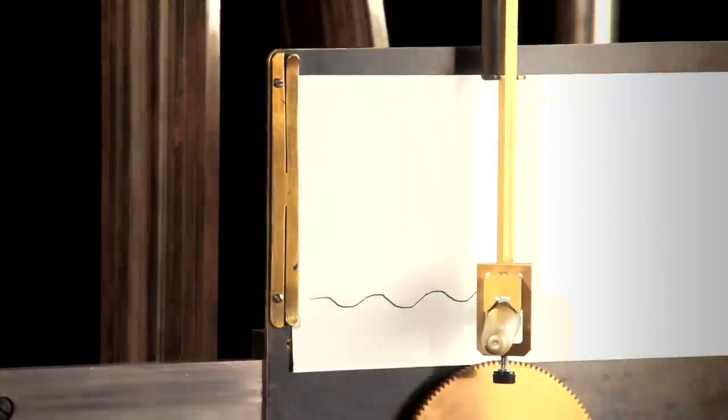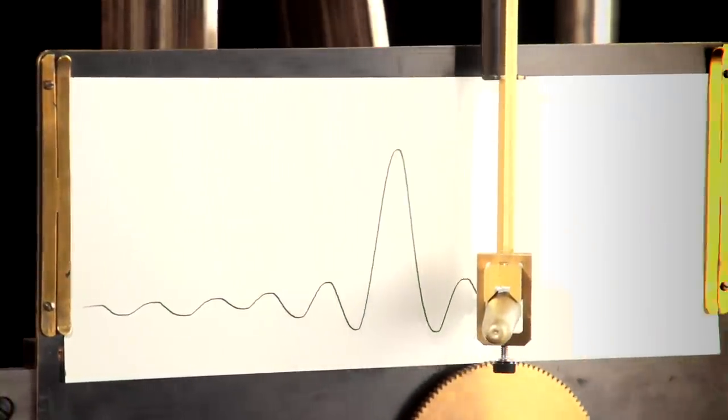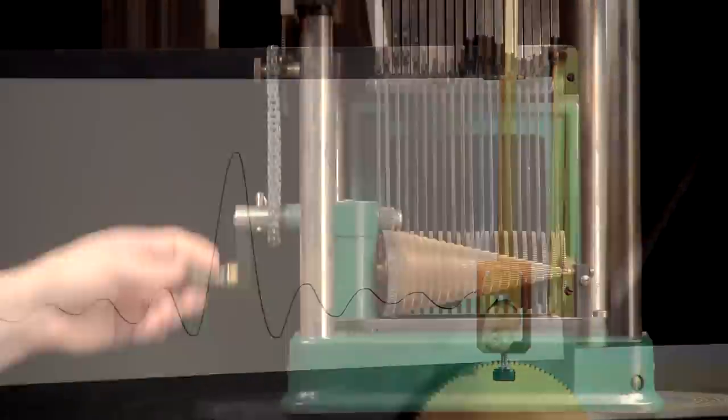When we turn the crank, we produce a new function that reveals the correct coefficients. To see how we get these coefficients, we'll look at the side of the machine.